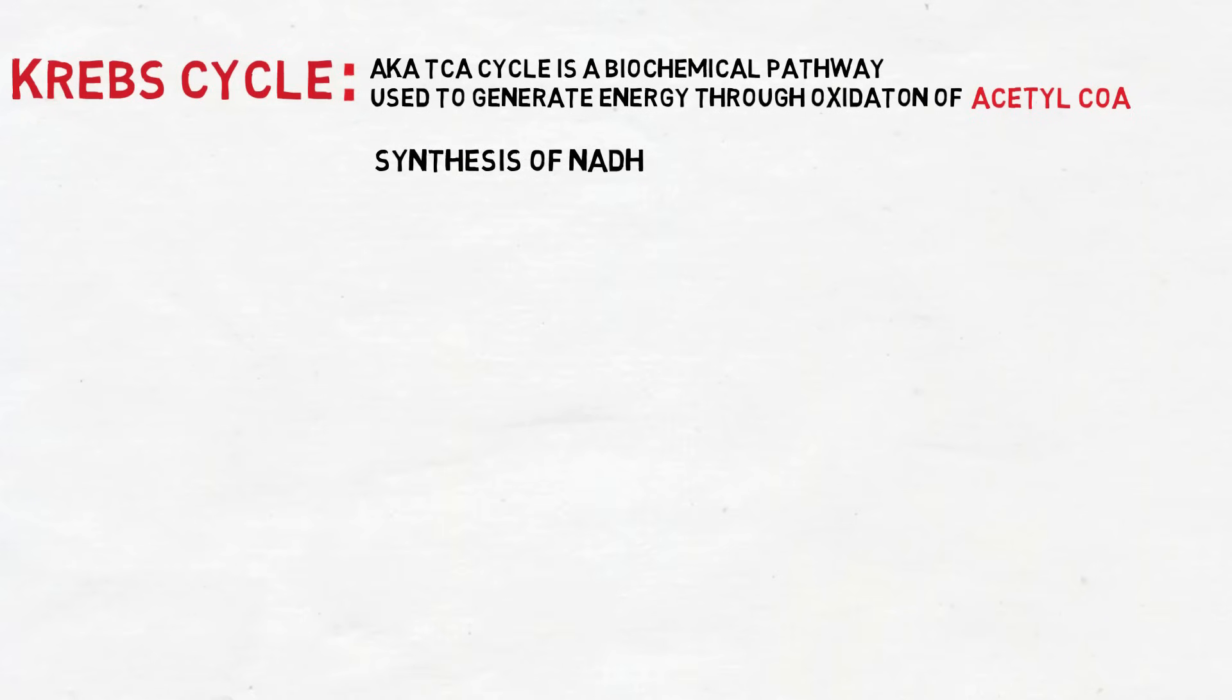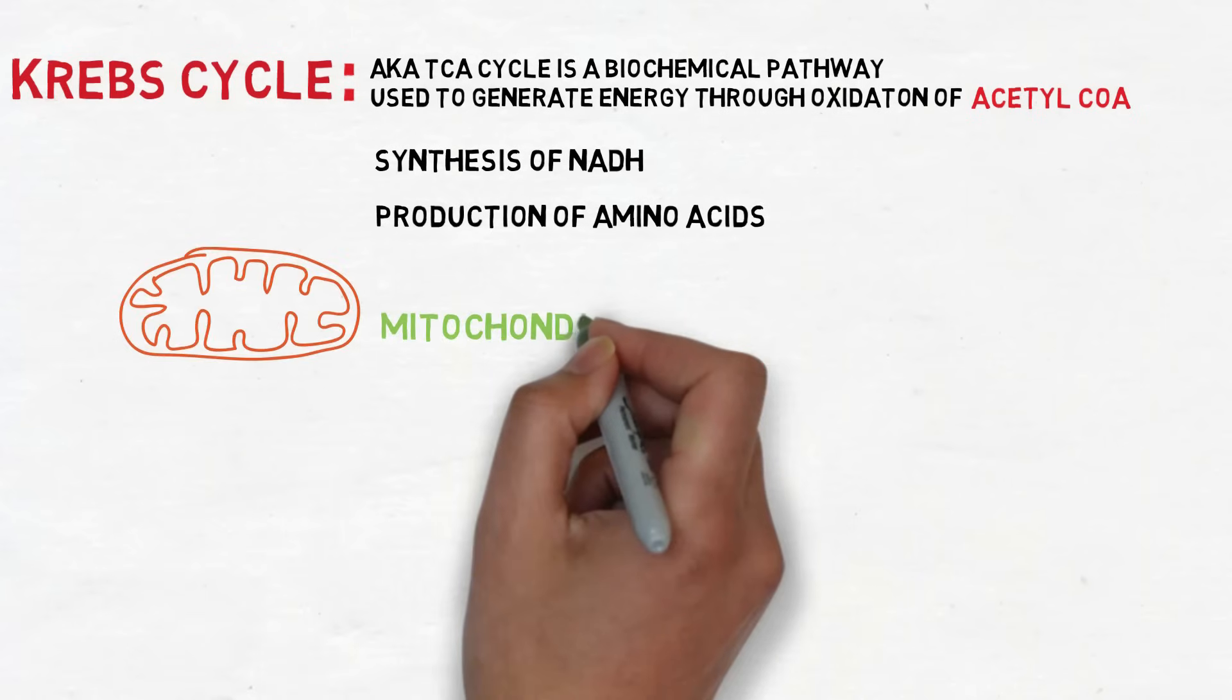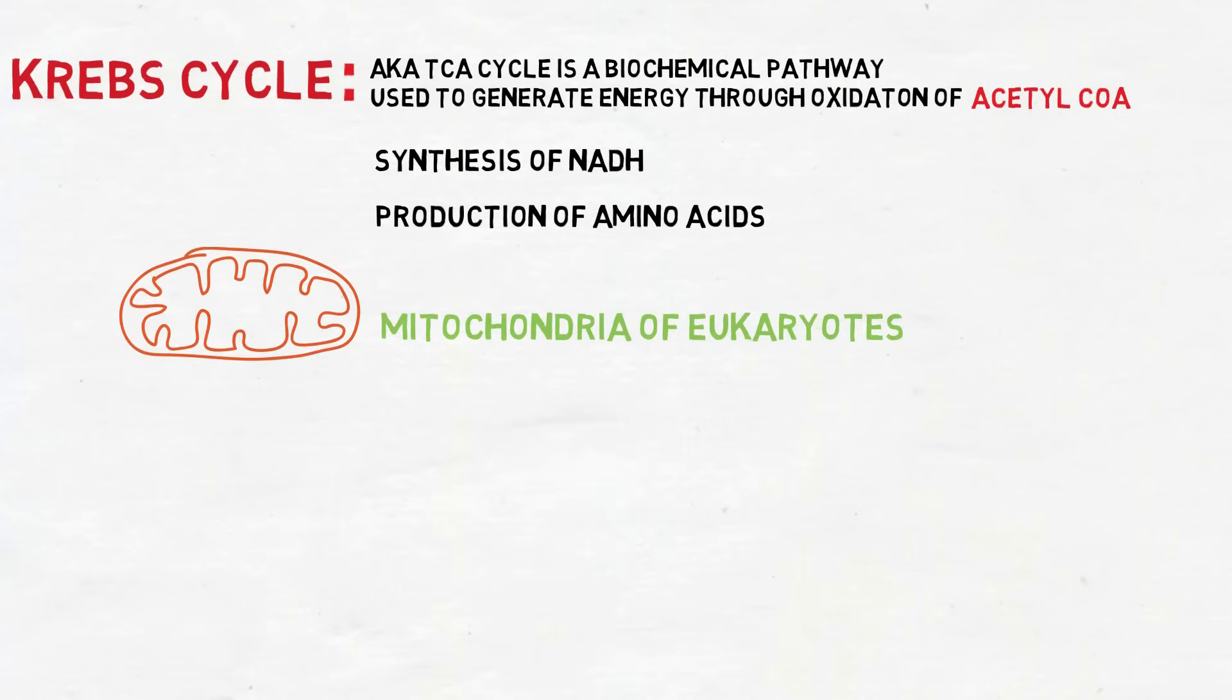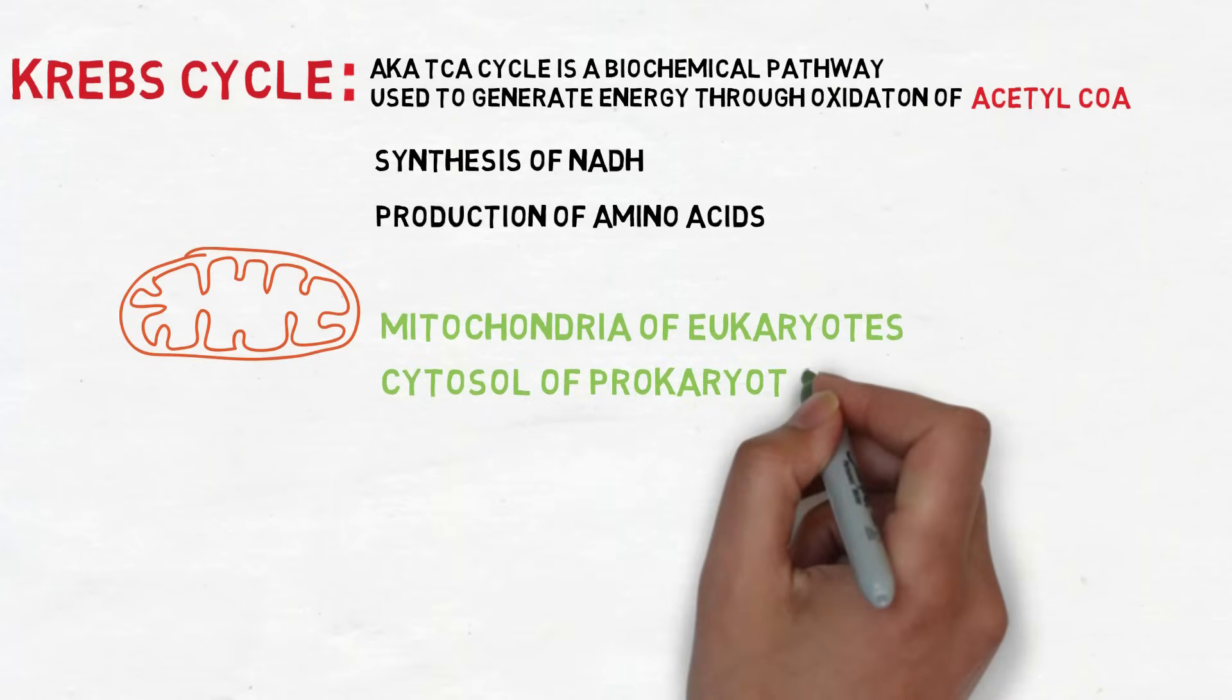It is also used for the synthesis of NADH and for the production of amino acids. Krebs cycle takes place in the mitochondria of eukaryotes and in the cytosol of prokaryotes.